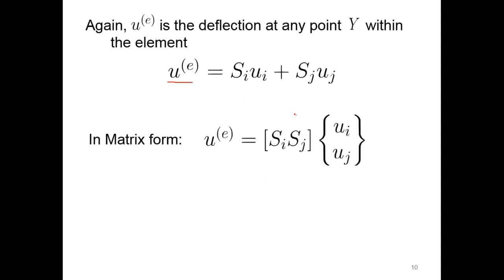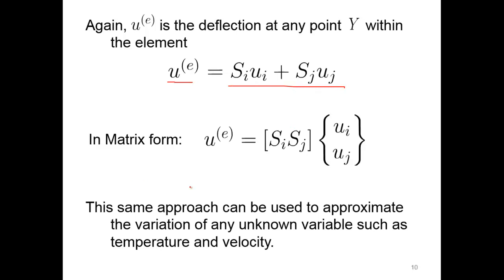This is the deflection at any point within the element — u superscript e. In matrix form, we take our shape function row matrix [Si, Sj] multiplied by our deflection column matrix, and we basically recreate this equation. The same approach can be used to approximate the variation of any unknown variable, such as temperature or velocity. We'll come back to this later — substituting temperature instead of displacement, and knowing the temperatures at both ends of an element, we can solve for the temperature within the element.